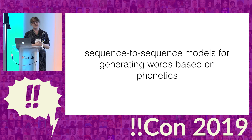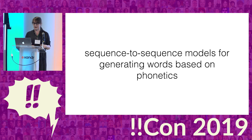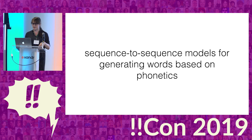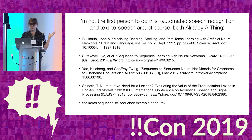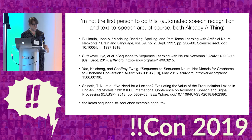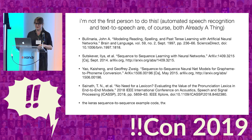So, neural networks to the rescue. What we need is a statistical model of what letter will come next in a word given some phonetic information. The kind of model that can do this is called a sequence-to-sequence model, and this is what I've been playing with for the past little while. I'm not the first person to work with sequence-to-sequence models for this kind of thing, and I've made use of a number of references, especially the Keras sequence-to-sequence example code, which has been invaluable.